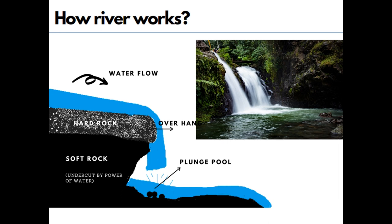Waterfalls are often formed when a layer of hard rock overlaps a layer of soft rock. The rushing water has high energy, so the falling water undercuts the soft rock and erodes its material, depositing it elsewhere. The hard rock left overhanging eventually collapses as there is no support. The fallen rock crashes into the plunge pool — a deep basin or cavity at the foot of a waterfall — where the rocks swirl around causing further erosion.